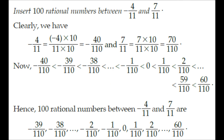Before we move on to method 3, let's take the last example of method 2. If asked to insert 100 rational numbers between minus 4 by 11 and 7 by 11, we multiply both by 10 to get minus 40 by 110 and 70 by 110. Like the previous question, we then have an entire range from minus 39 by 110, minus 38 by 110, and so on up to 59 by 110 and 60 by 110. These are the numbers that lie between minus 4 by 11 and 7 by 11.